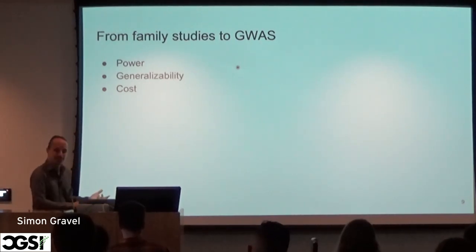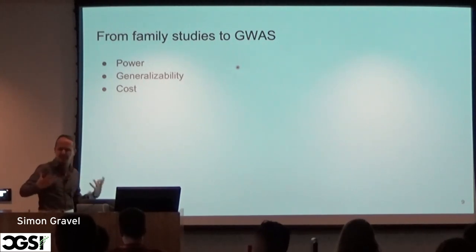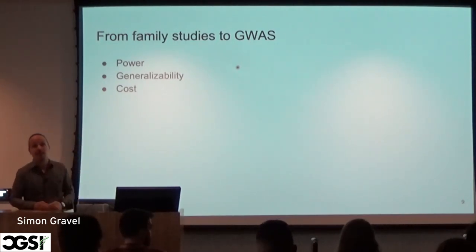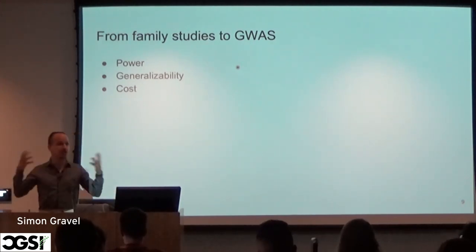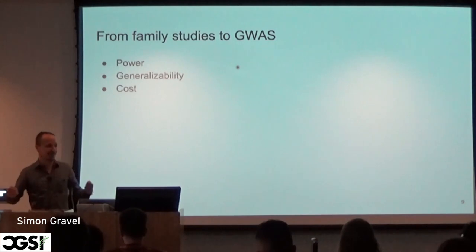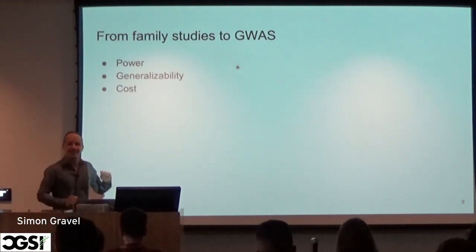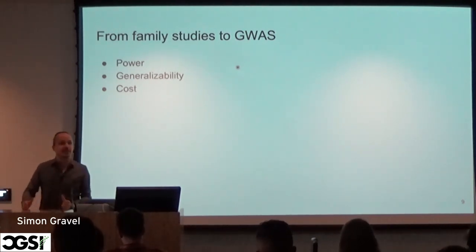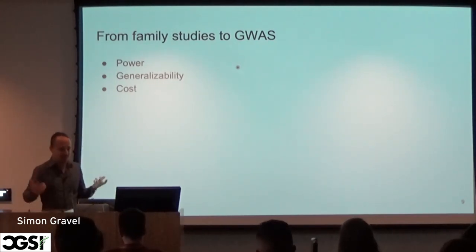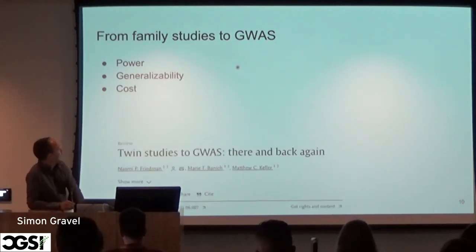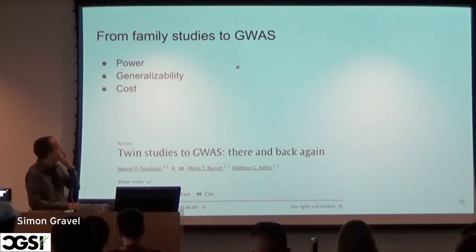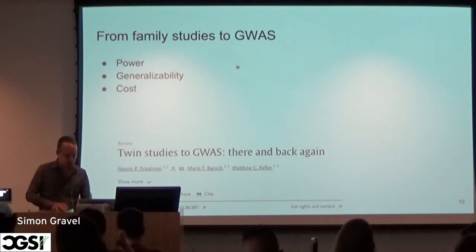So why have we moved to GWAS? One reason is power for complex traits — we might have better power to discover common variants that explain lots of variation. Generalizability is a big one: if you do the UK Biobank, you have 500,000 people and a whole bunch of phenotypes you can study. Whereas with family studies for specific diseases, you have to collect families for every disease separately, which is very time-consuming and costly. It's very difficult nowadays to convince a funding agency to recruit a very large family.